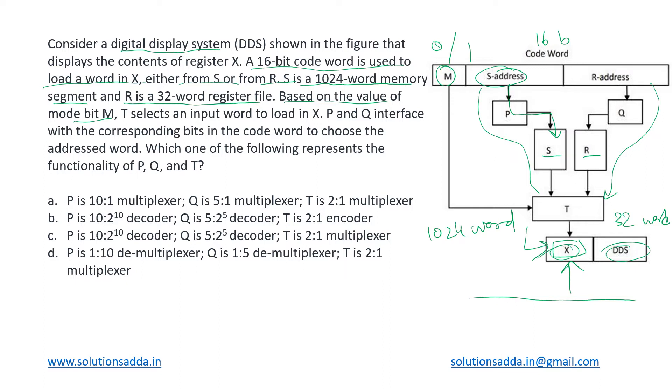In S, R, then given to T, something like that. They are hiding out the implementation details and something is there about the mode bit which we are not concerned. Based upon that, T selects an input word to be loaded in X. T is selecting an input word either from S or from R and giving it out to X. P and Q interface with the corresponding bits in the code word to choose the address word. So these P and Q devices are here, what are they doing? They are acting as the interface between choosing this address and giving it out to S and R.